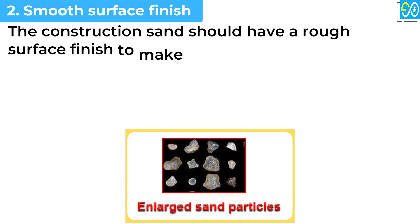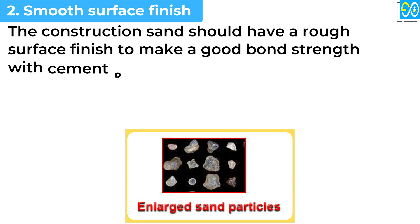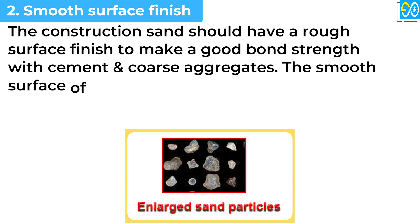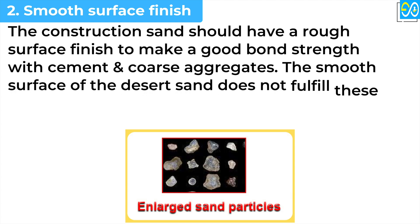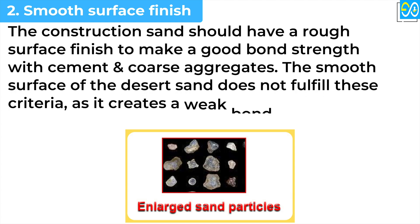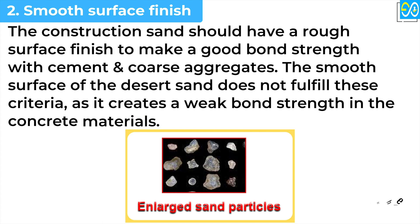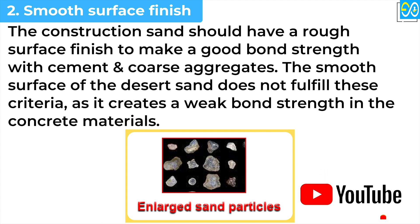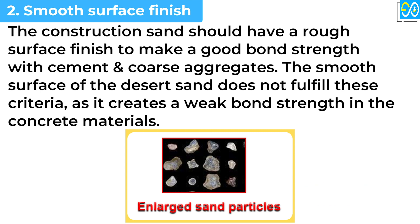Smooth surface finish. The construction sand should have a rough surface finish to make a good bond strength with cement and coarse aggregates. The smooth surface of the desert sand does not fulfill these criteria, as it creates a weak bond strength in the concrete materials.